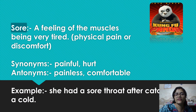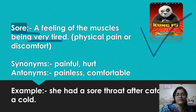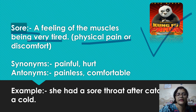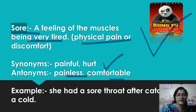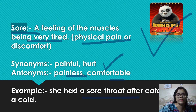Okay, so to begin with, we have Kung Fu Panda. We have the word sore — this means physical pain or discomfort, a feeling of being very tired in the muscles. Synonyms: painful or hurtful. Antonyms: painless, comfortable. Example: She had a sore throat after catching the cold — so that is the meaning of sore.